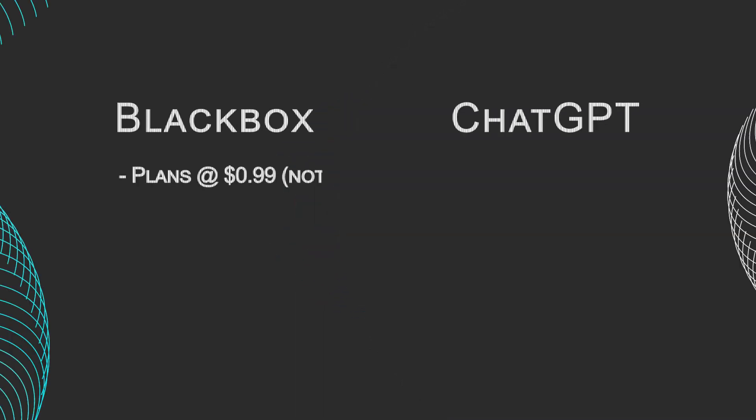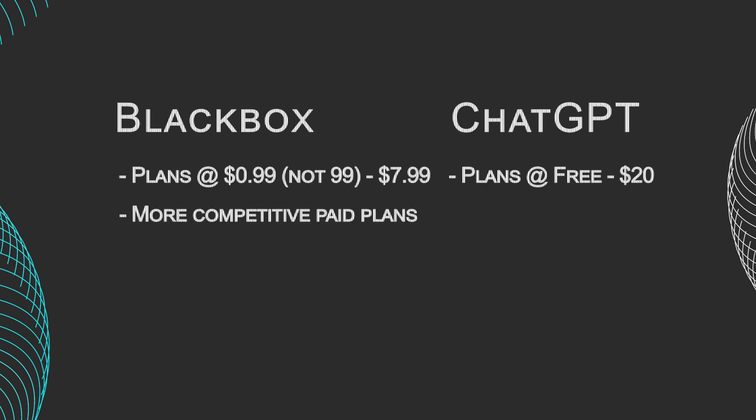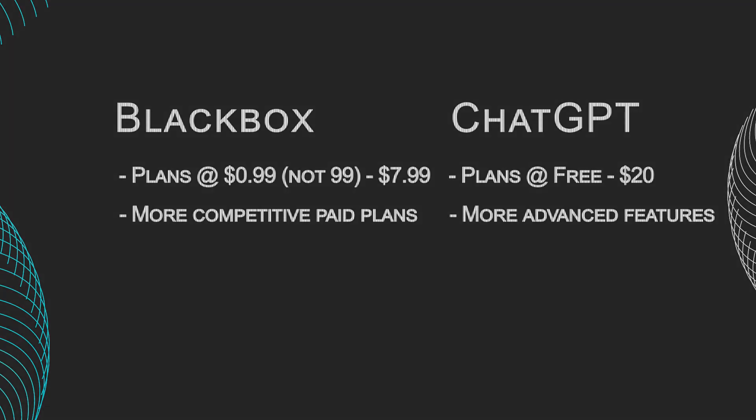Blackbox AI offers two pricing options: the Good Developer Plan at $99 per month, and the Legendary Developer Plan at $7.99 per month. In contrast, ChatGPT offers two tiers as well: the standard ChatGPT subscription and ChatGPT Plus, which includes GPT-4, for $20 per month. While Blackbox AI has a lower-priced option starting at $7.99 per month, ChatGPT offers a more advanced version with GPT-4 capabilities at $20 per month.